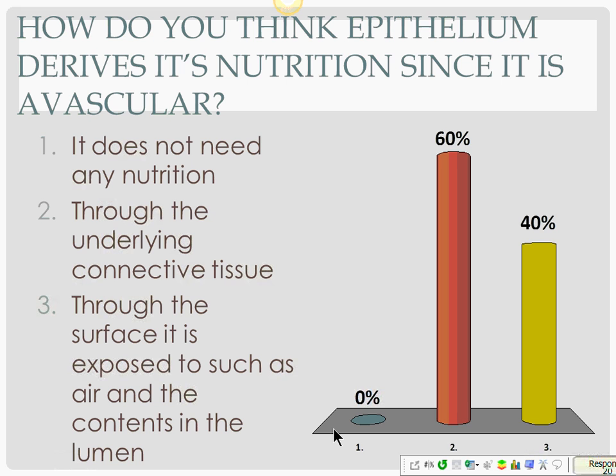60% got it right. Yes, it is through the underlying connective tissue. Nutrition is not through the air or through the luminal contents — it's through connective tissue. Remember, epithelium always rests on a basement membrane, and the basement membrane is secreted both by the epithelial cells and the connective tissue underneath. Connective tissue is very vascular, so through diffusion, epithelium gets its nutrition. We're applying the concept of diffusion here.